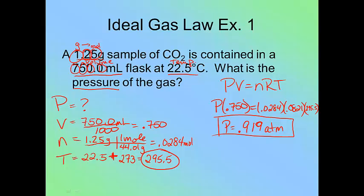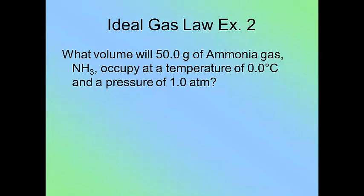Fairly straightforward. I have five variables. They gave me four of them. I just plug and chug. Let's do one more together. Example number two. What volume will 50 grams of ammonia gas, NH3, occupy at a temperature of zero degrees Celsius at a pressure of one atmosphere? So again, I list off, I know I'm going to be using PV equals nRT.